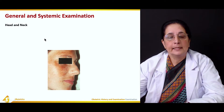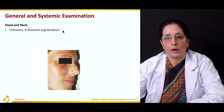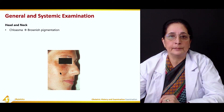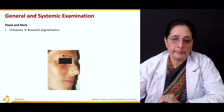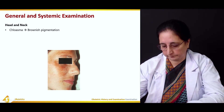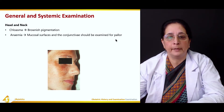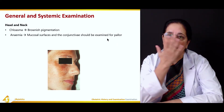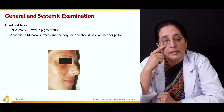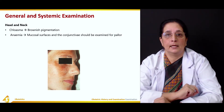In head and neck examination, chloasma — a brownish pigmentation — is very common in pregnancy, sometimes due to low iron levels causing anemia. For anemia, the mucous membranes and conjunctiva should be examined for pallor: ask the patient to look up, pull the lower eyelid down, and check if the conjunctiva is pale, which is a sign of anemia.